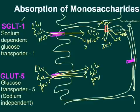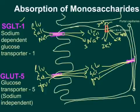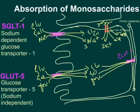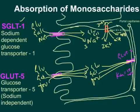GLUT5 works on the concentration gradient of glucose, galactose, and fructose, while SGLT1 works on the sodium gradient. The monosaccharide gradient is maintained because glucose, galactose, and fructose are continuously taken out of enterocytes into the portal capillaries by GLUT2, a transporter located on the basolateral surface, with a low affinity KM of 15 millimolar. From there, monosaccharides are carried to the liver and peripheral tissues.